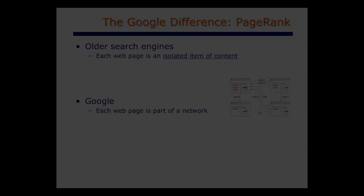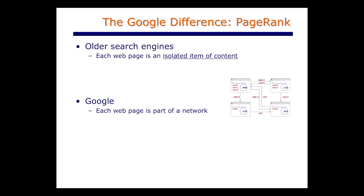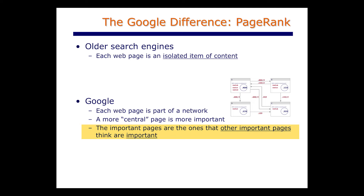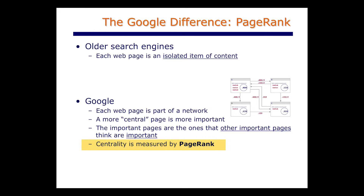The definition of centrality here is related to something that might be familiar if you think about your social or professional networks. A person of influence is often someone who other people of influence consider influential. Or an important person is someone who other important people think are important. Centrality and important pages thinking that you are important are very closely related, and the relationship is made rigorous through the measurement of something called the page rank of a page.